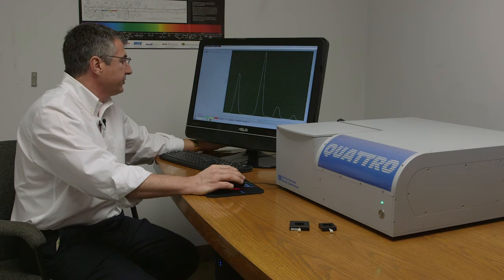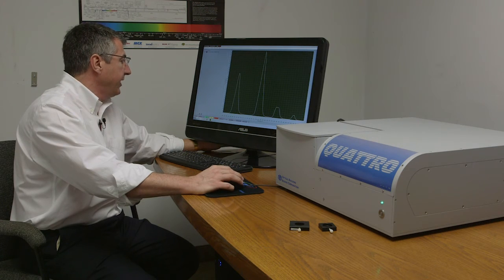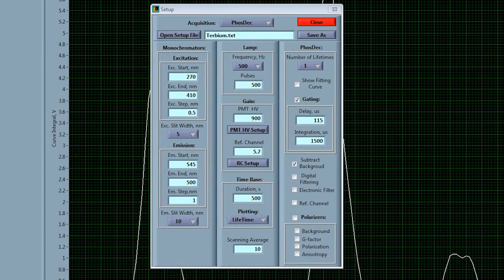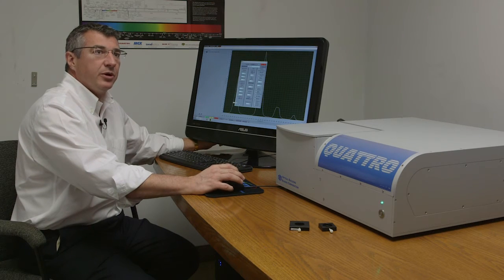So right now we're going to actually do a quick decay measurement of this same sample. Here I'm going to actually now open up a setup panel on the screen and in this setup panel we're basically able to adjust all of the parameters for virtually any kind of a luminescence experiment that we're interested in doing.